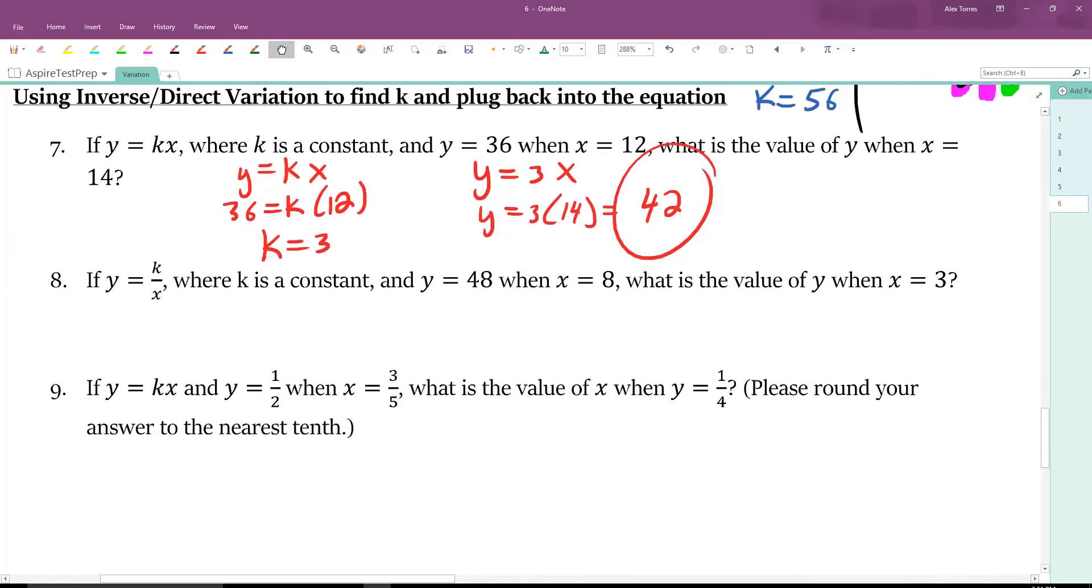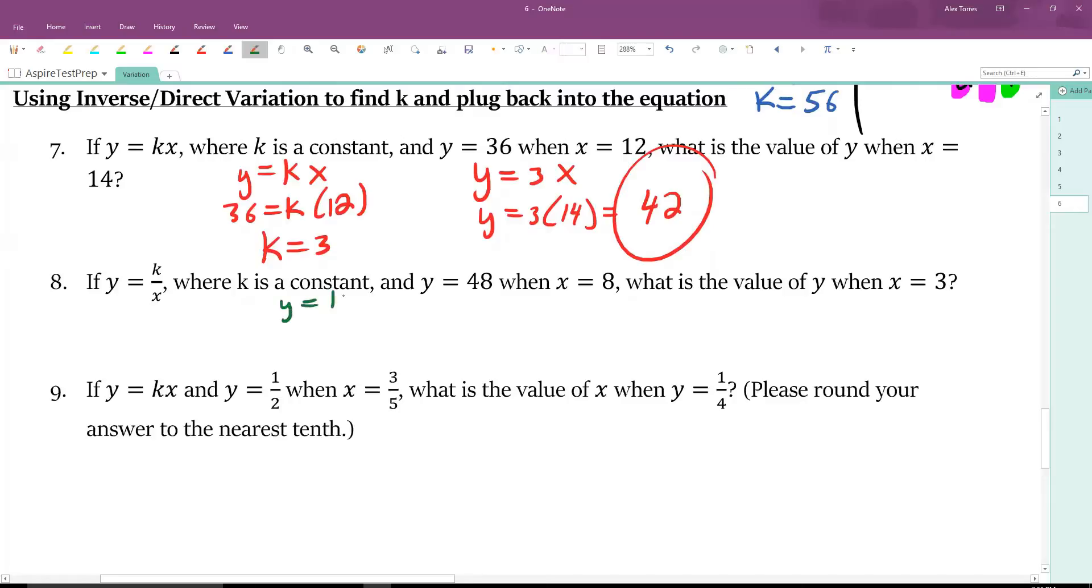On number 8, Y equals K over X. Y equals 48 when X equals 8. 48 equals K over 8. K equals 48 times 8, which is 384. What's the value of Y when X is 3? Y equals 384 over 3. Now we're just plugging in 3 for X in our new equation. 384 divided by 3 is 128.